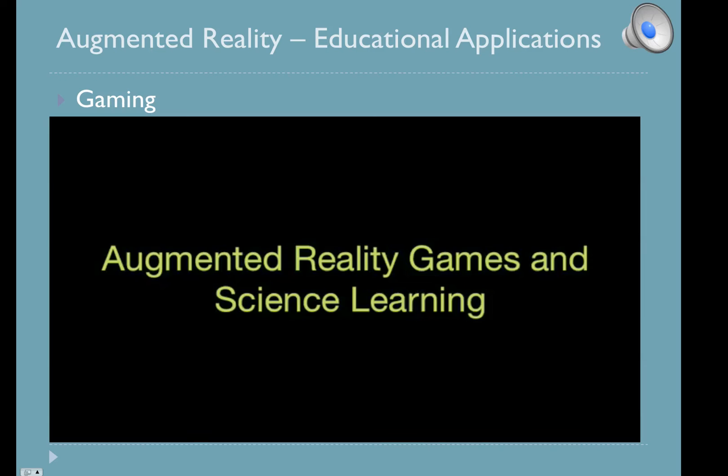In 2006, Karen Schreier created a game called Reliving the Revolution. It takes place in the Battle of Lexington. Using GPS location, players are assigned various roles and sides in the battle to understand what happened there. They interact with various virtual characters. This is work being done at MIT and the Education Arcade.